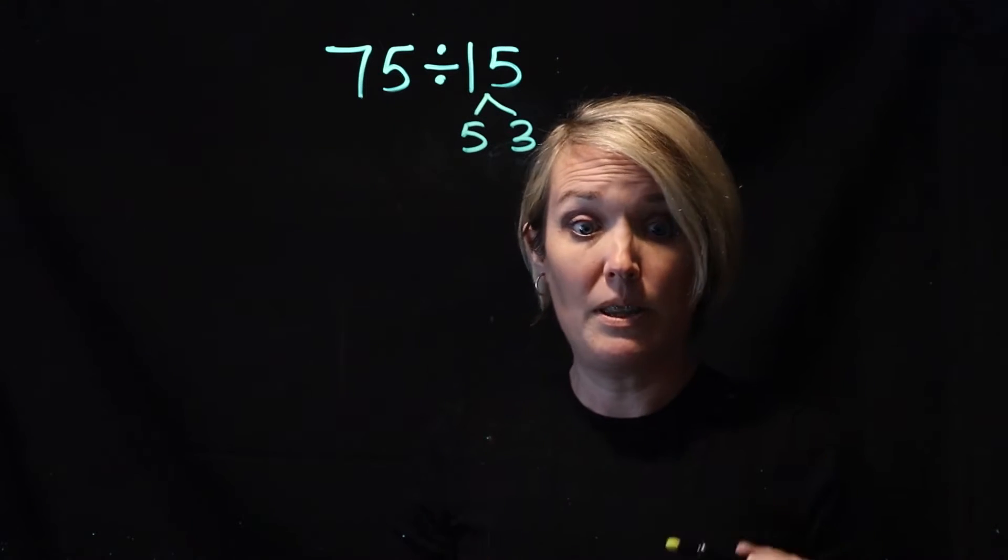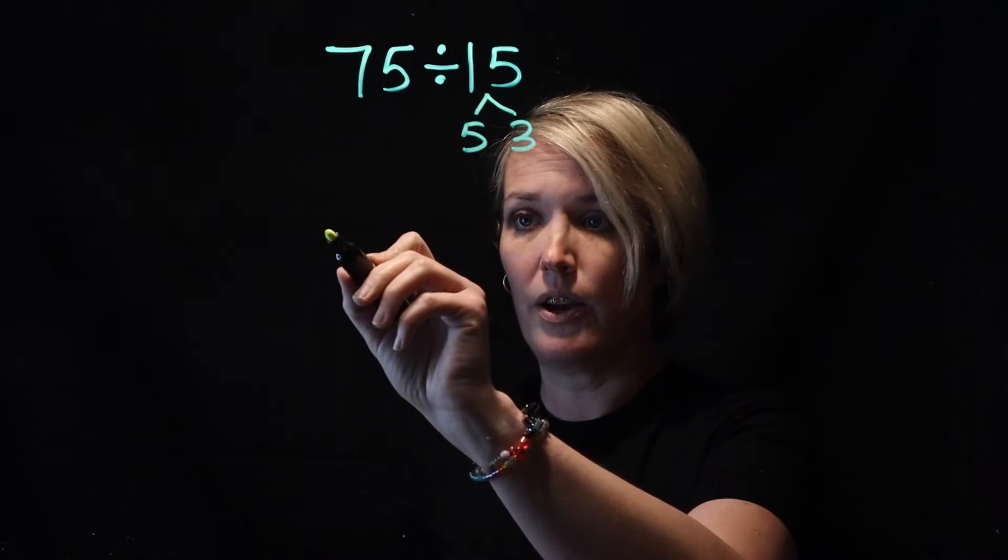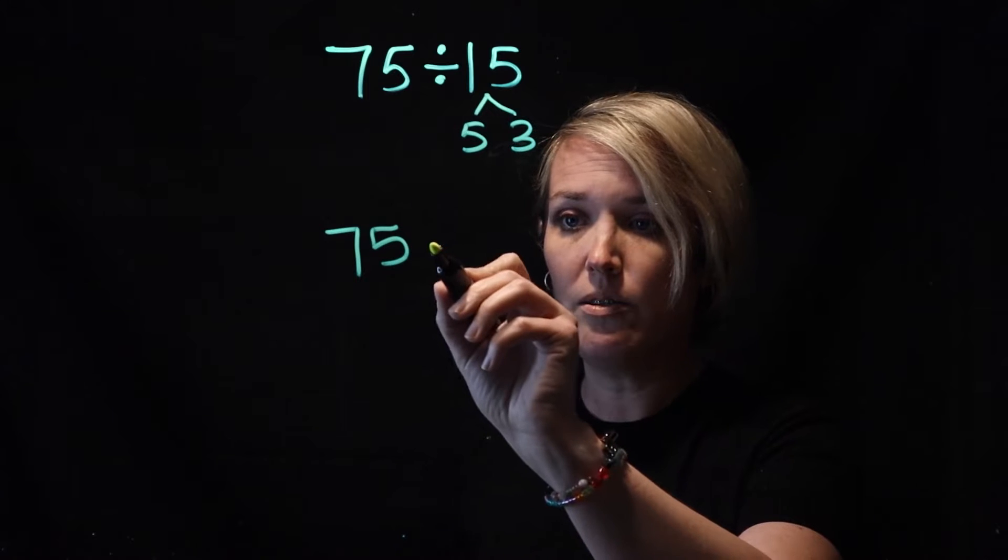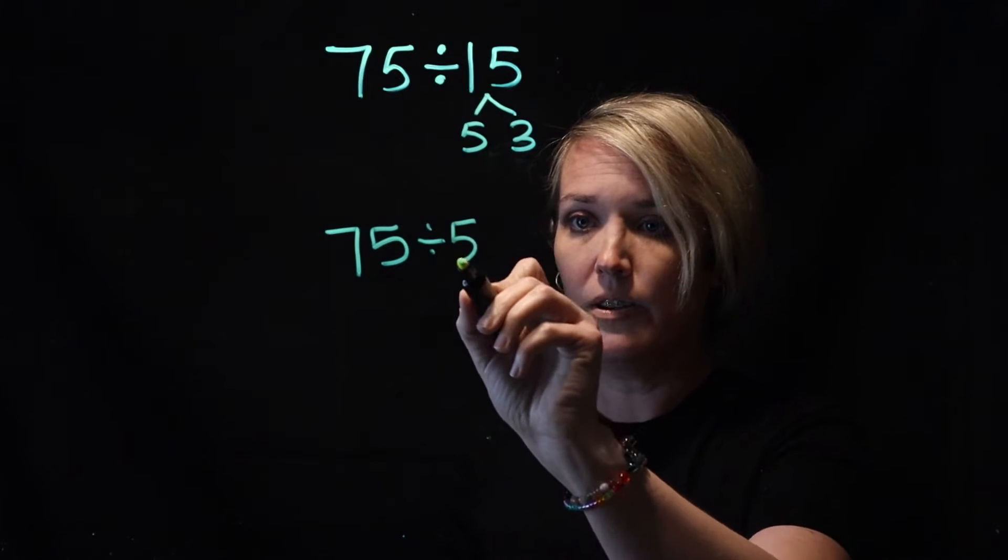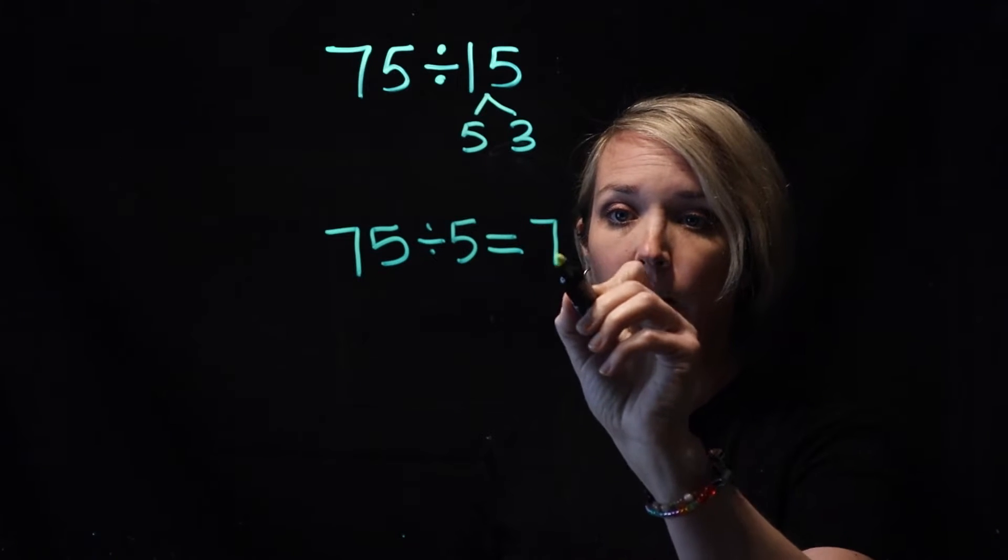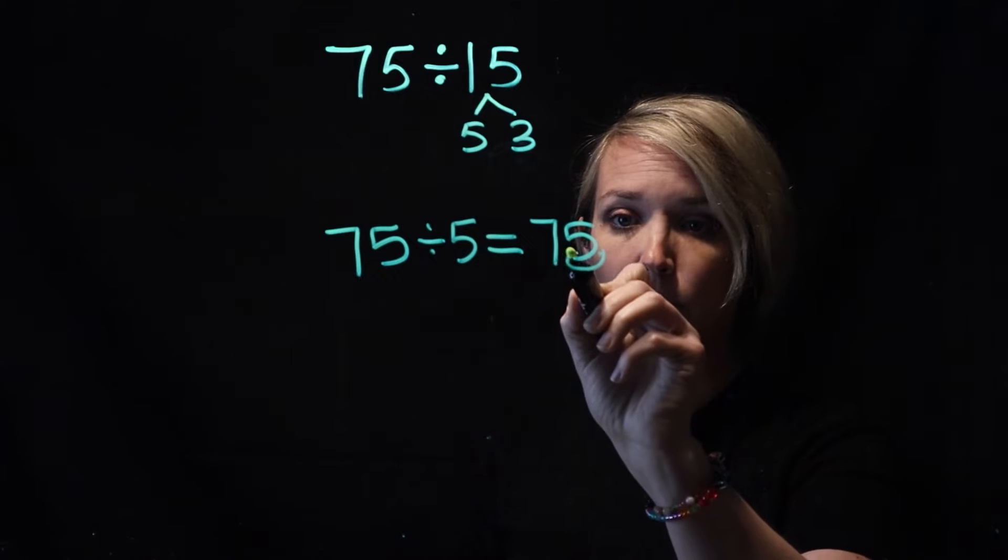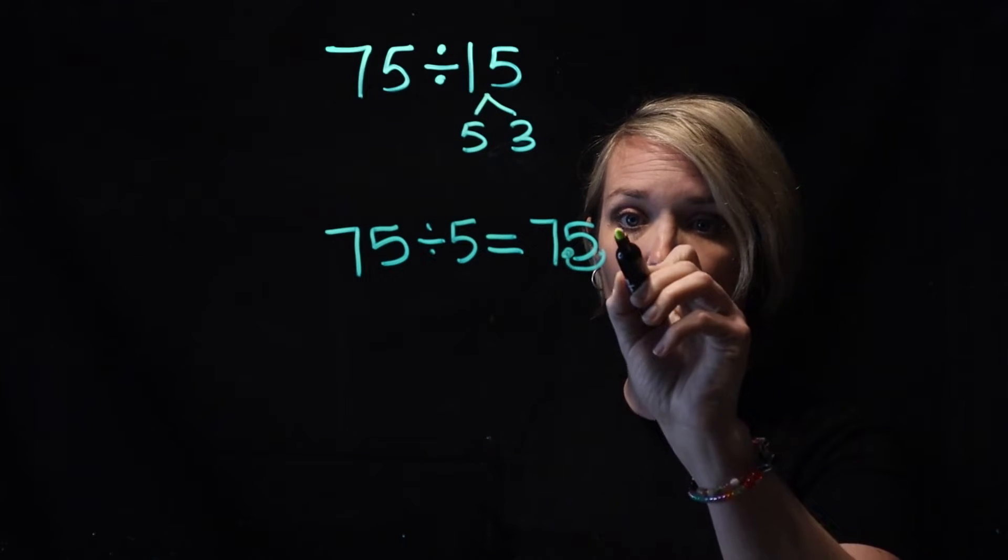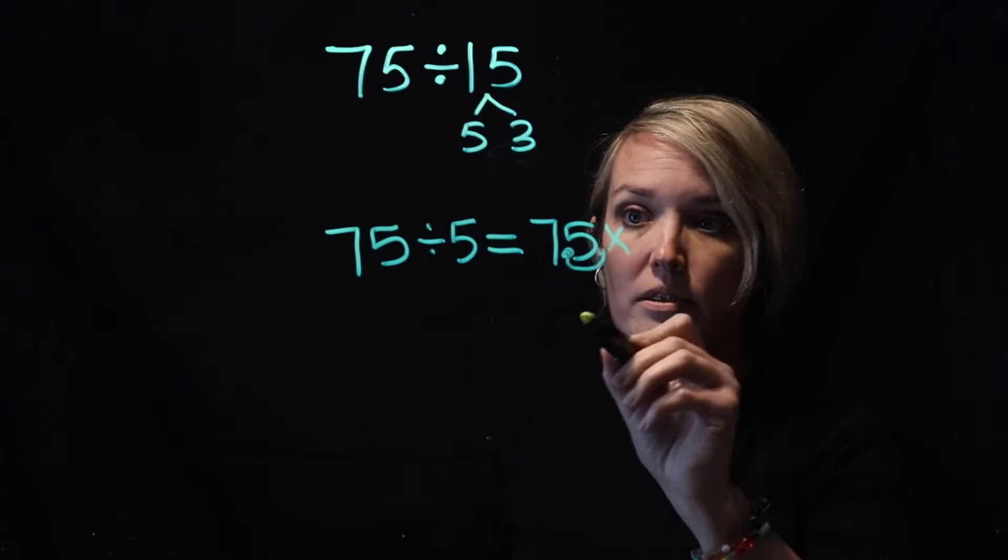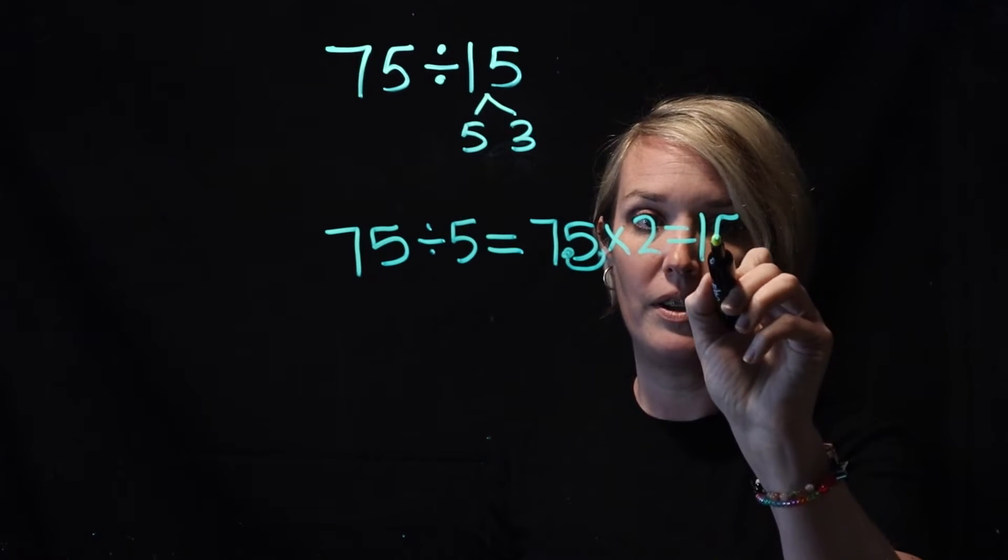Now she said that she's going to be thinking about equal groups. So 75 divided by 5 - she said that isn't too bad for her because what she's going to do is think of 75 divided by 10, and she said that's easy because she just moves the decimal place over once, so she gets 7.5. And then to get 75 divided by 5, she just multiplies that by 2 to get 15.